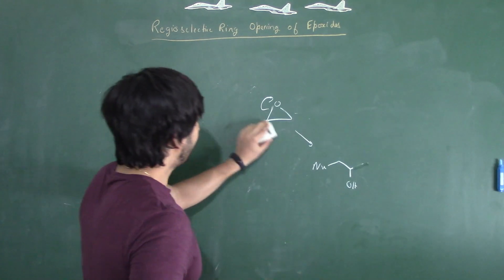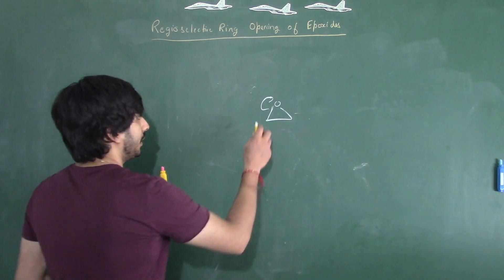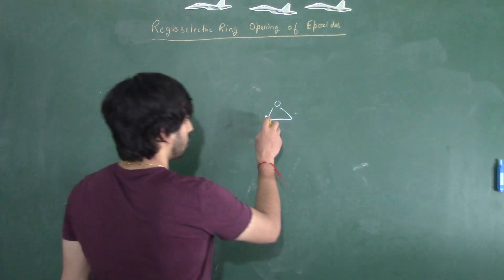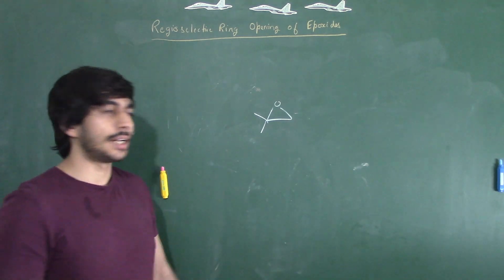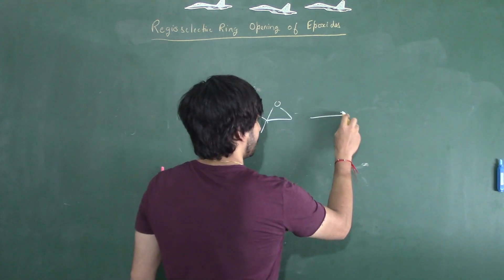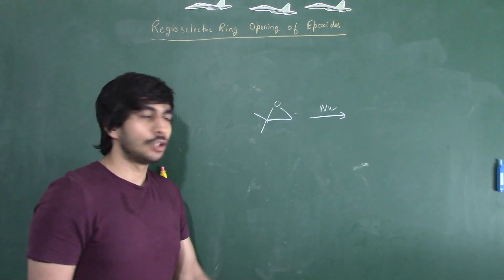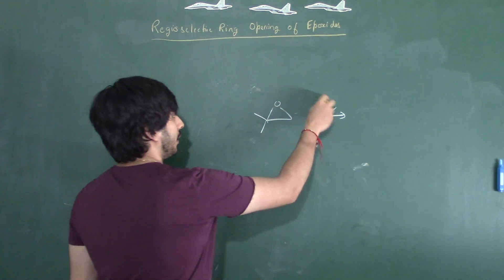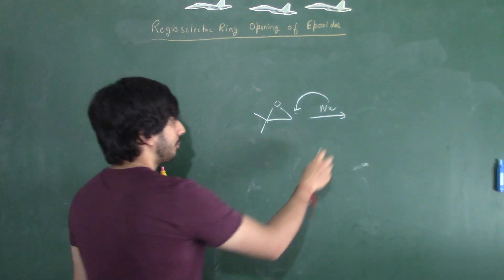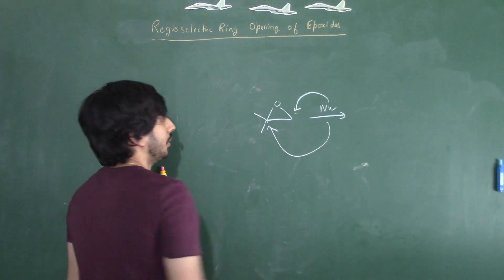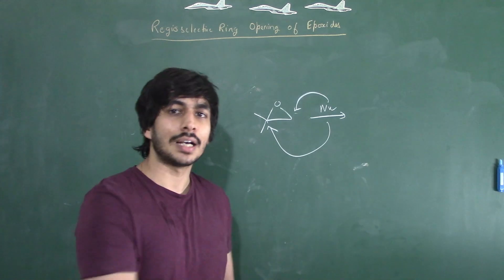But now if I make this epoxide unsymmetrical — let's say I substitute two methyl groups over here — this is where the question arises. If I add a nucleophile, the nucleophile can either attack the less hindered side or the more hindered side. These are the two possibilities and we will get a different product because the epoxide is now unsymmetrical.